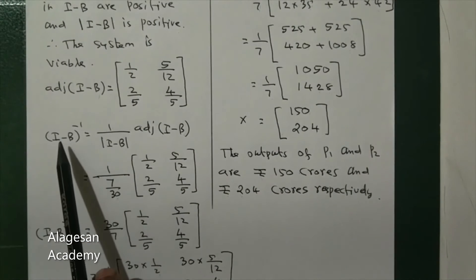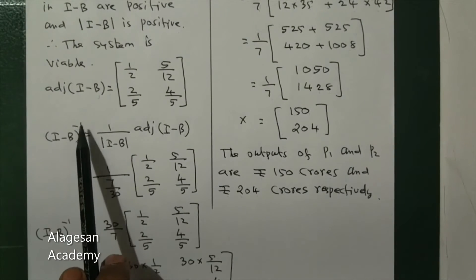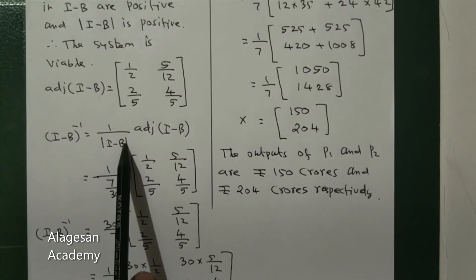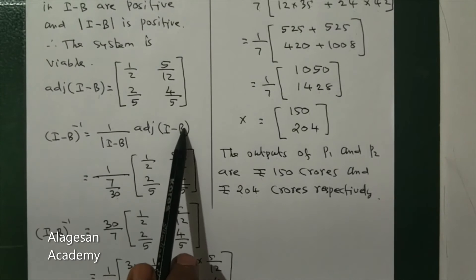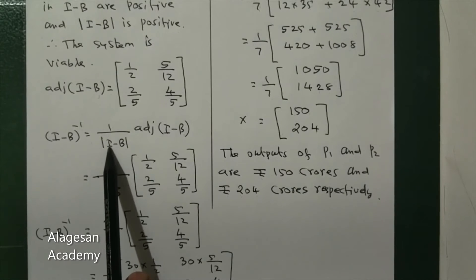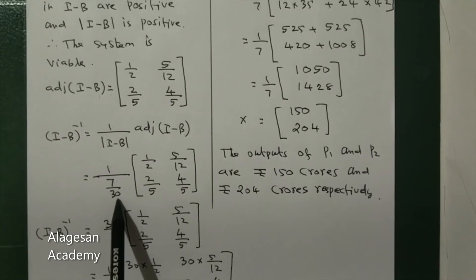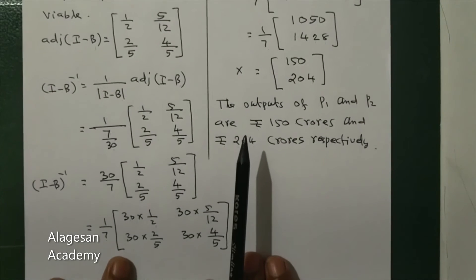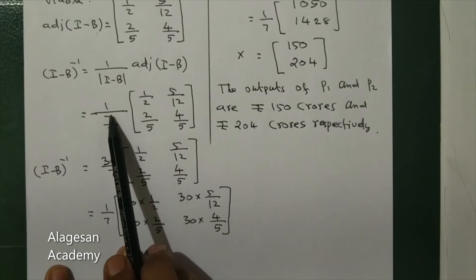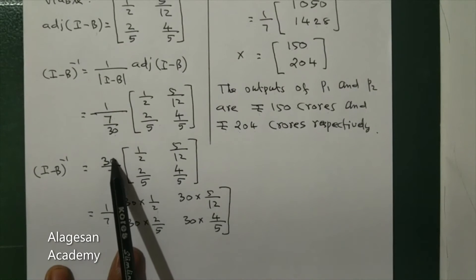Next, I minus B whole inverse equals 1 by determinant of I minus B into adjoint of I minus B. Determinant of I minus B is 7/30, so 1 by 7/30 becomes 30/7. Then 30/7 times the adjoint matrix gives us the inverse.